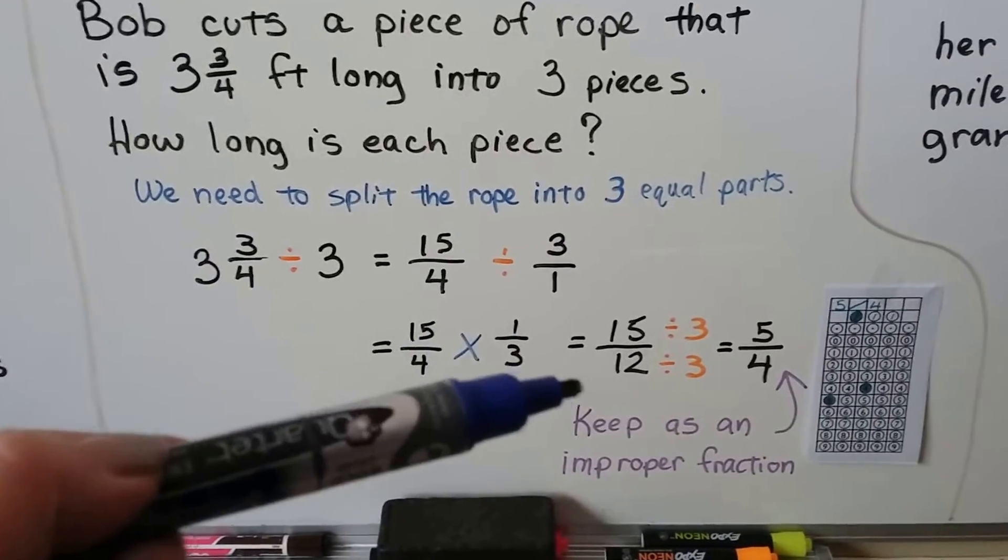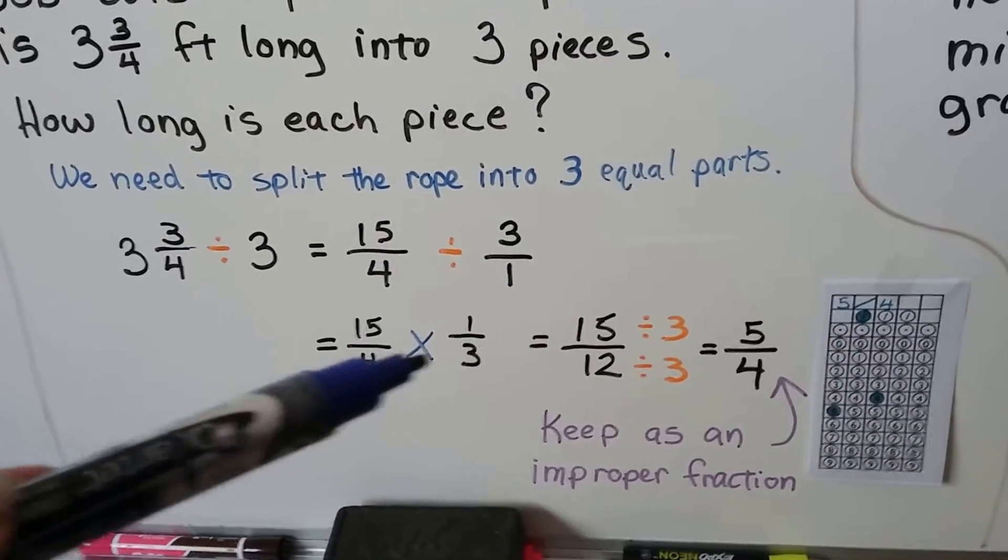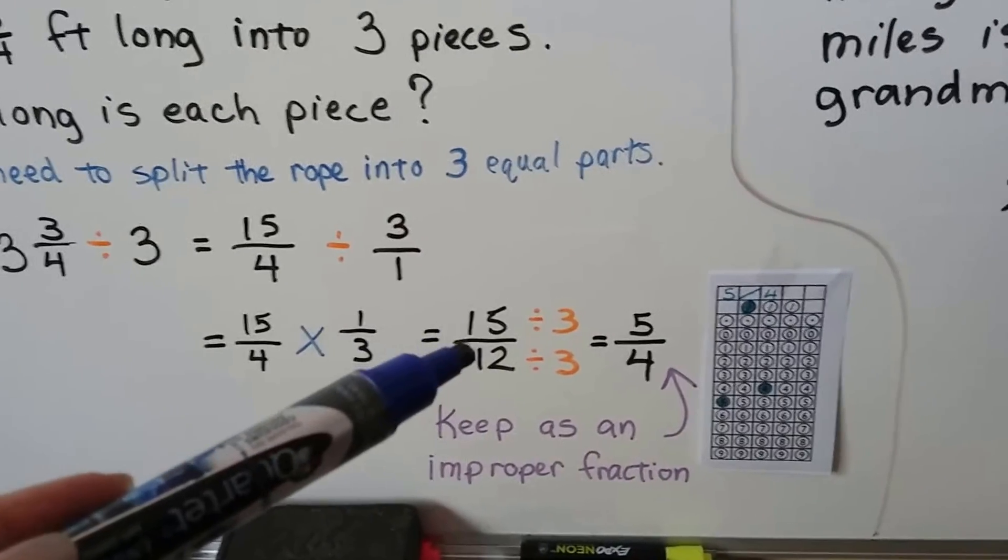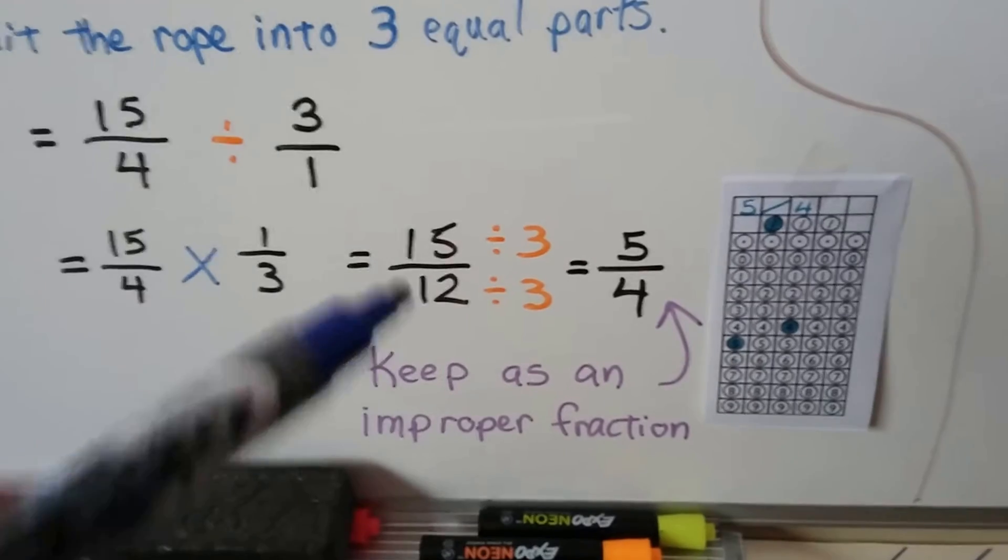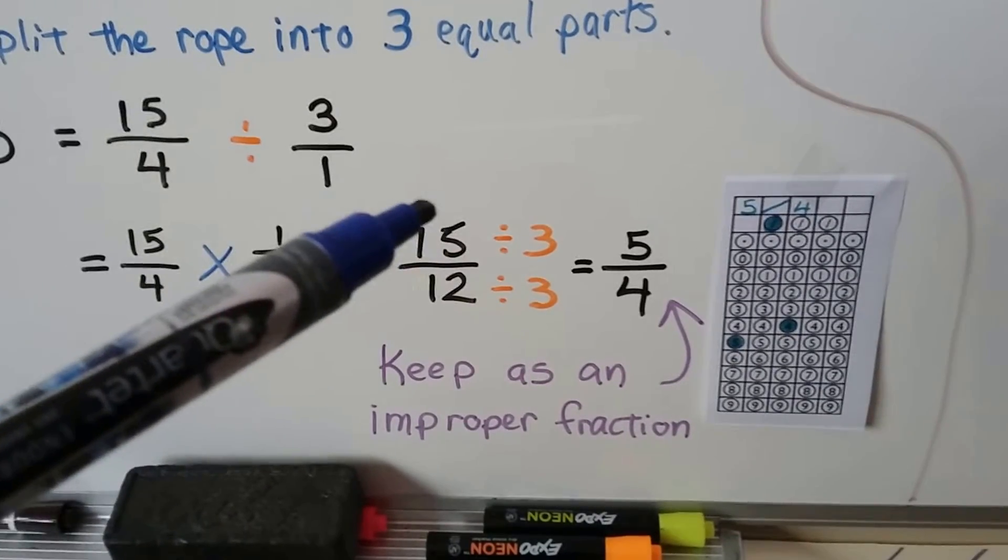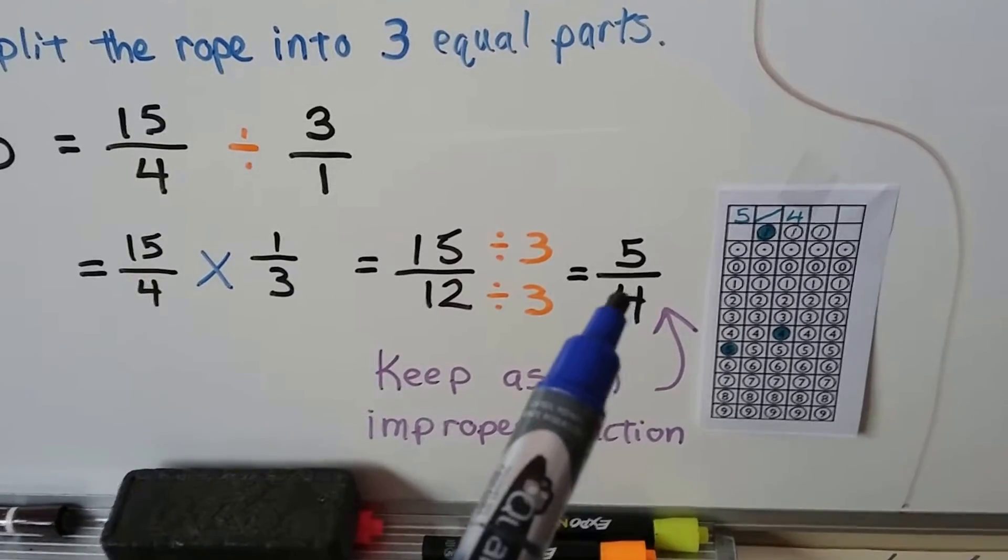Now we can multiply straight across. 15 times 1 is 15, and 4 times 3 is 12. Now, it's an improper fraction, but if you list this in your answer grid as the answer, it's going to be marked wrong because it can be reduced. We can divide both the numerator and denominator by 3 and get 5/4s.